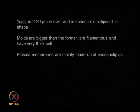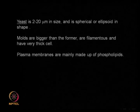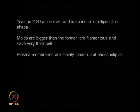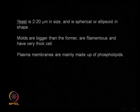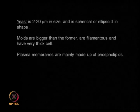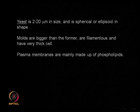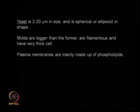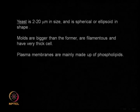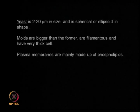Gram negative bacteria are mechanically less robust — so I can more easily break them using a mechanical method compared to gram positive. But they are chemically more resistant than gram positive. So if I want chemical methods, gram positive bacteria are more susceptible. If I want mechanical methods, gram negative are less robust and more easily broken. I can select mechanical or chemical methods depending on whether it is gram positive or gram negative.